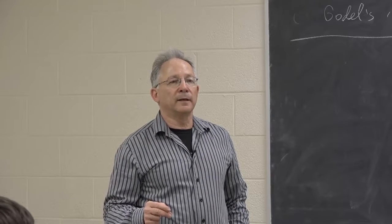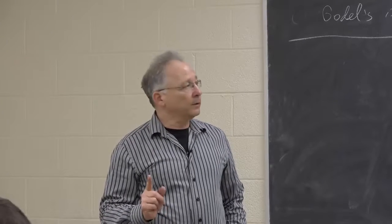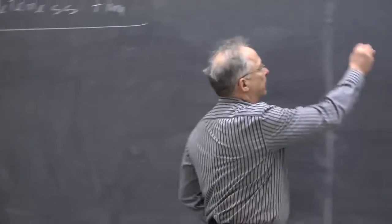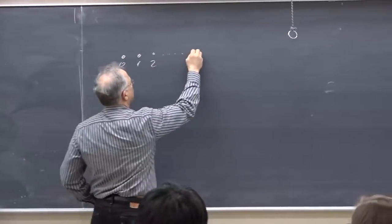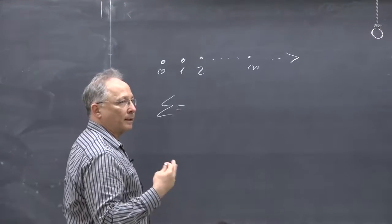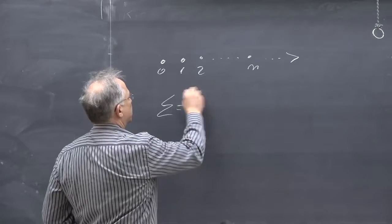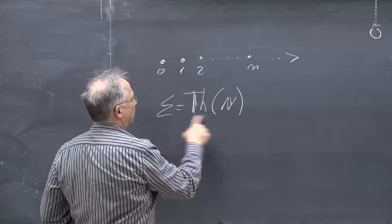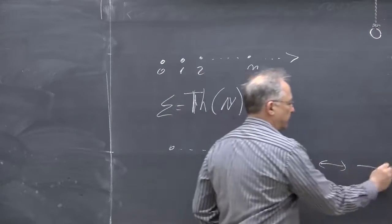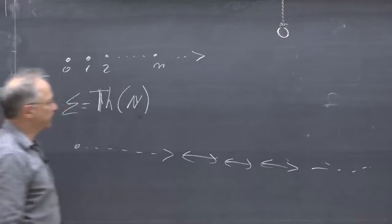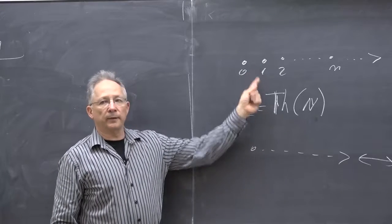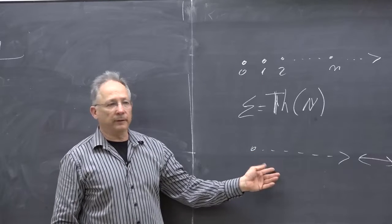Because no matter how hard we try, we can get a non-standard model. Right, because of the non-standard models. Non-standard models show us that we cannot find a unique definition. We want to define the model of natural numbers 0, 1, 2, ... n. We write some set of formulas sigma — the set of all possible formulas that hold in the natural numbers. We ask, does it define the structure? It turns out we also have non-standard structures that satisfy sigma, meaning there is no formula that distinguishes them. They satisfy exactly the same formulas.